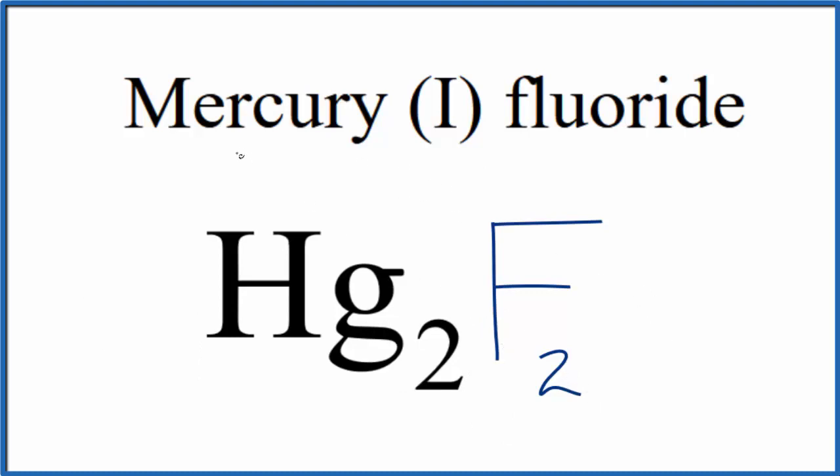You know that fluorine is 1-, and since you have two of them, it's 2-. So each one of the mercury ions has to be 1+. That's why we call it mercury (I).